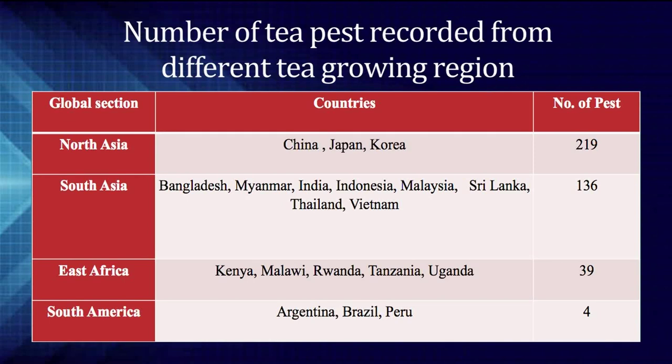Then, from the East African section, the countries are like Kenya, Malawi, Rwanda, Tanzania and Uganda. The total number of pests recorded is 39. The lowest number is recorded from South American countries like Argentina, Brazil and Peru, and the pests recorded is only 4. So, this is about the occurrence of different insects and pests in various tea-growing regions of the world.